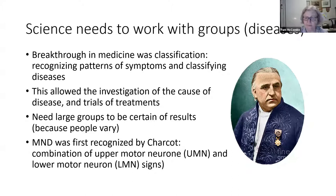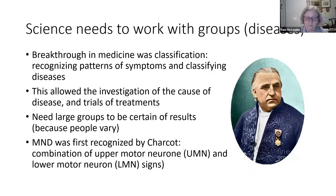Once you had a disease and thought you knew its treatment, you could say: let's give all patients with this disease this treatment and see whether it works. But we've always known that we need large groups of patients to study, because people vary — not necessarily in the disease itself, but in other aspects. Some people are tall, some short, some men, some women, some old, some young. Even people with the same disease have a lot of variability, which is why we need large groups so that differences can balance out.